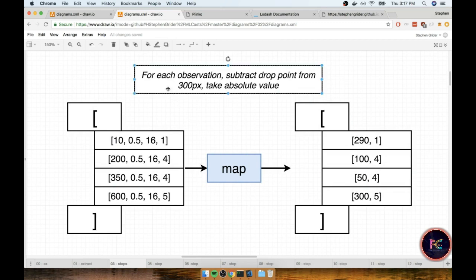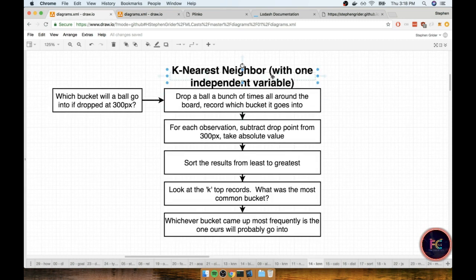The first step of k-nearest neighbor is to say that for each observation we want to subtract our drop point value from 300 pixels and take the absolute value. We're going to take our data array and pass it into lodash's map function. The result will be an array of arrays with just our distance as the first element and the bucket as the second element. I completely dropped off the ball bounciness and ball size because we're just concerned about doing this analysis with one variable.